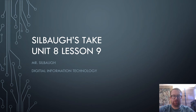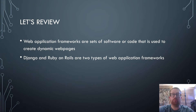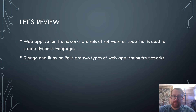Hi everyone, Mr. Silva here and this is my take on unit 8 lesson 9. In the last lesson we talked about web application frameworks, which are a set of software code used to create more dynamic web pages. Django and Ruby on Rails are two types of these web application frameworks.